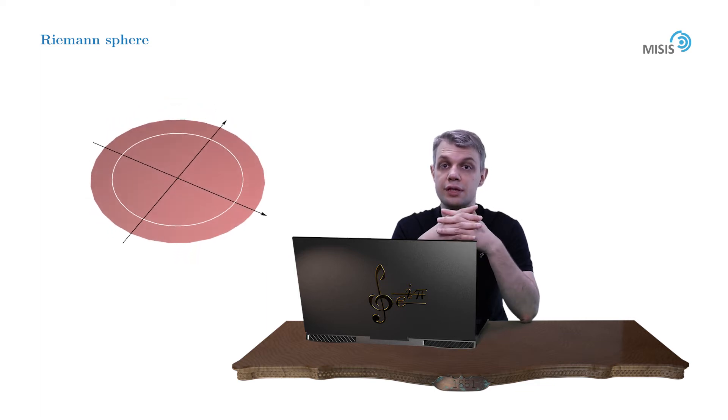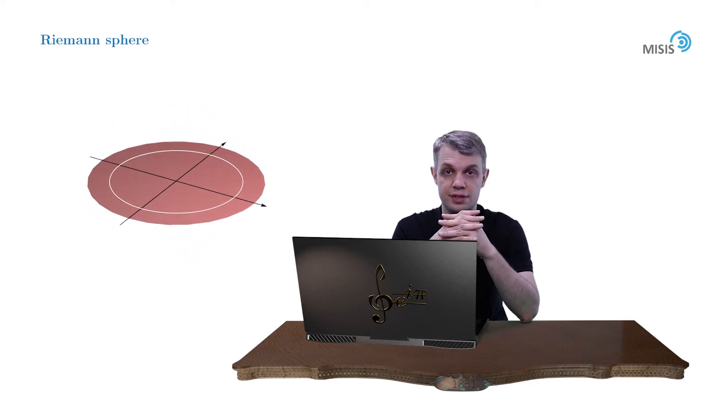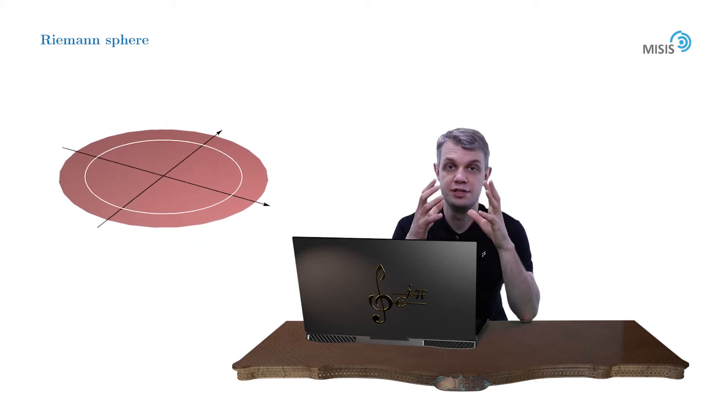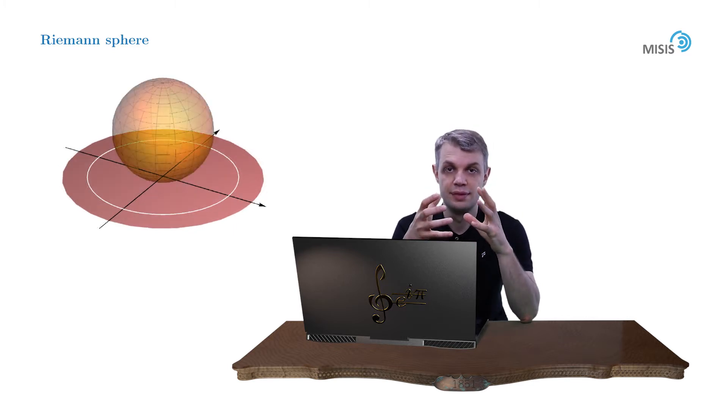Björn and Riemann were the first who introduced a nice geometrical interpretation of this observation. Let us put a sphere on a complex plane. Now it's more known as a Riemann sphere.